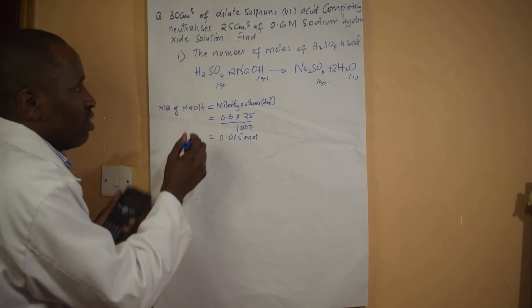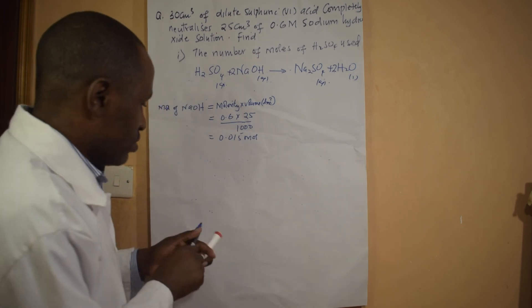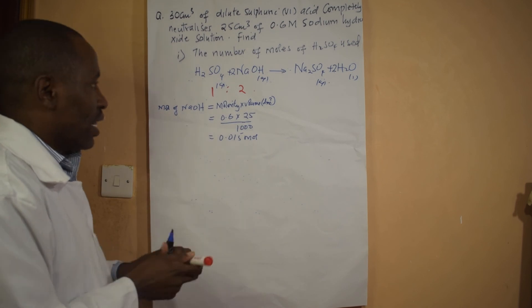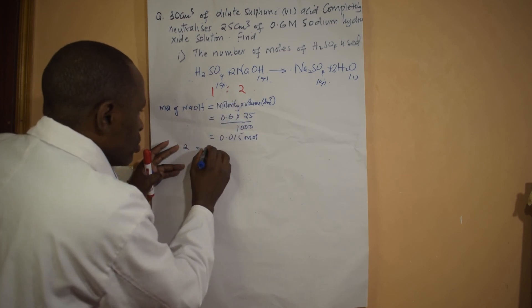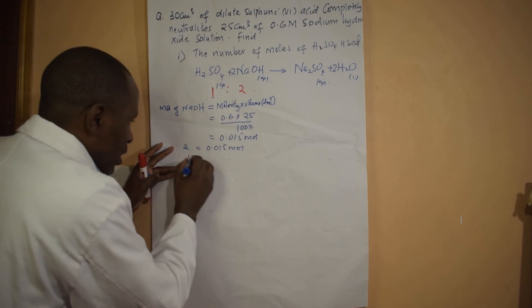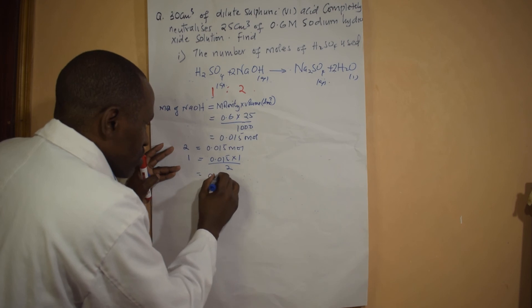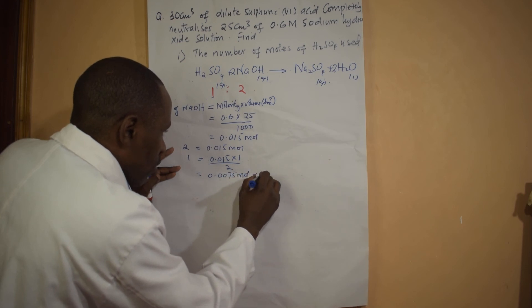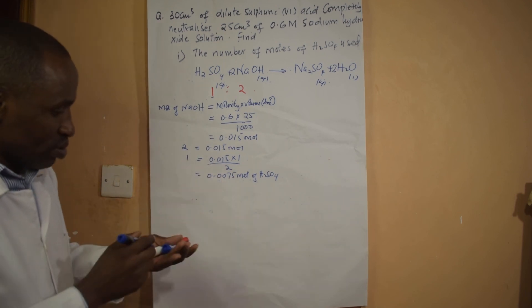I get 0.015 moles of sodium hydroxide. Now looking at the reacting mole ratio of sodium hydroxide to sulfuric acid, it is 2:1. So if sodium hydroxide is 0.015 moles with a ratio of 2, then sulfuric acid with a ratio of 1 will be 0.015 divided by 2, which gives 0.0075 moles of sulfuric acid.